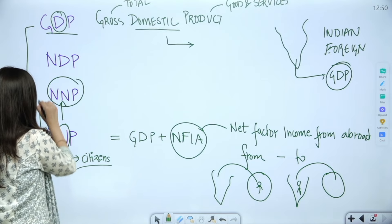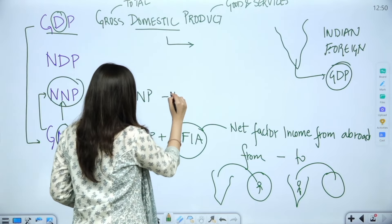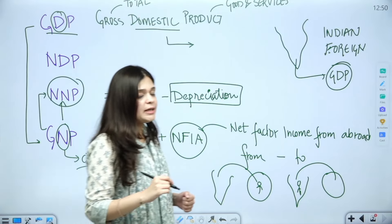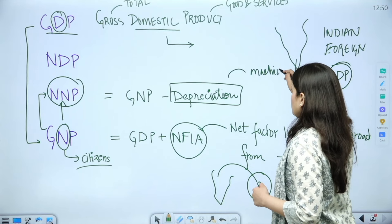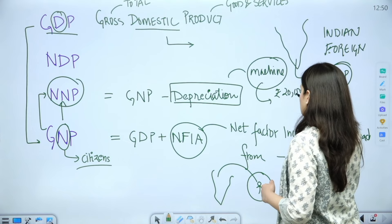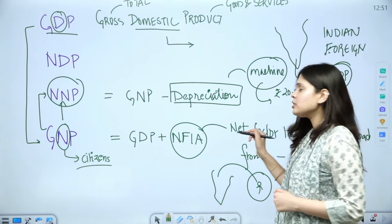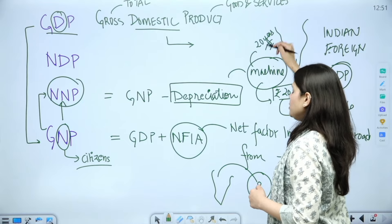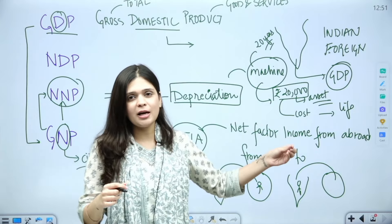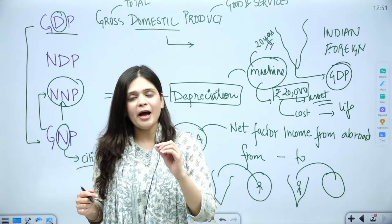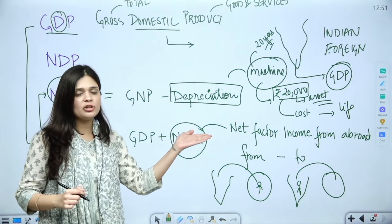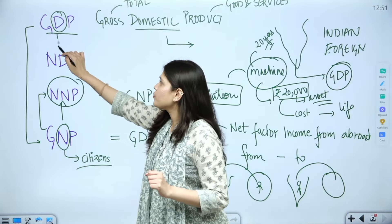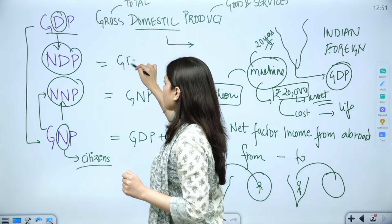To go from GNP to NNP, we do GNP minus depreciation. Depreciation is the wear and tear of capital goods. For example, if you buy a machine worth 20,000, you add it as an asset because it will be used to produce goods and services. But that cost of 20,000 is spread over 20 years, so every year we add 1,000 rupees as a cost. This is an accounting method. So we subtract depreciation, because every year the machine will be less productive.